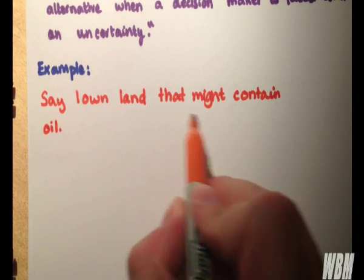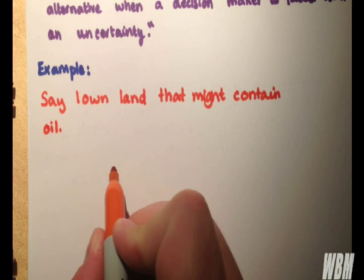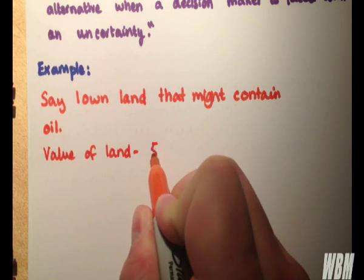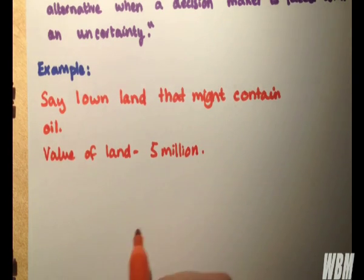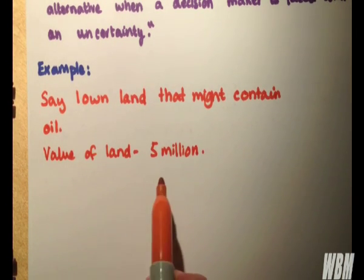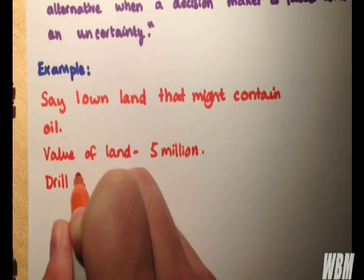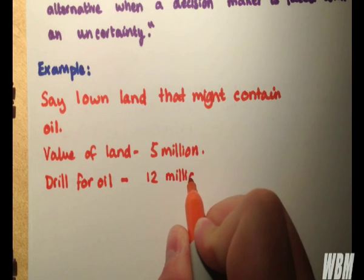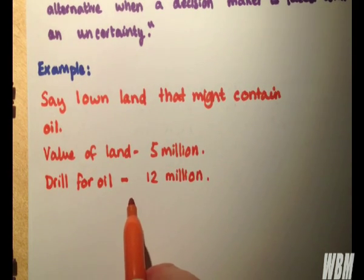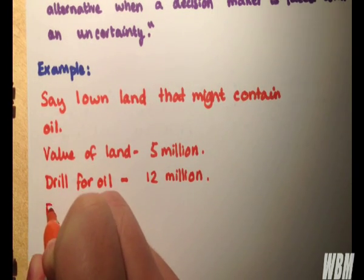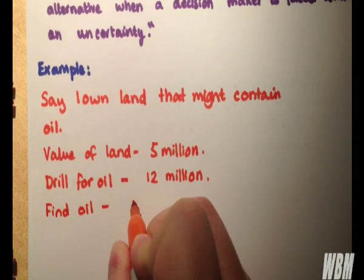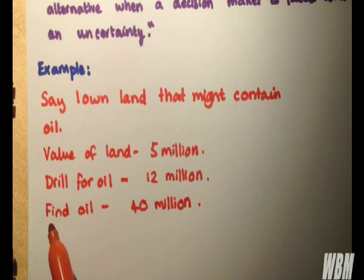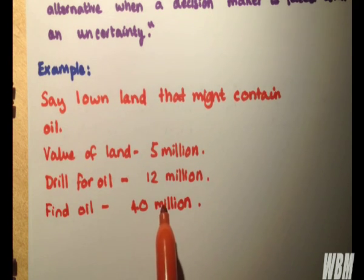So say that I own land that might contain oil. The value of the land is worth 5 million. To drill for oil costs 12 million. If I find oil, I earn 40 million. However, if I find no oil, obviously the value of the land will decrease and it will be worth only 3 million.